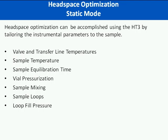The static headspace optimization can be used with the HT3 by tailoring the instrumental parameters to your sample. The HT3 offers the ability to tune your sample analysis by varying many of the instrument parameters. Those will include the valve and transfer line temperatures, the sample temperature which is your platen temperature, the sample equilibration time, vial pressurization, sample mixing, sample loops, and loop fill pressure.